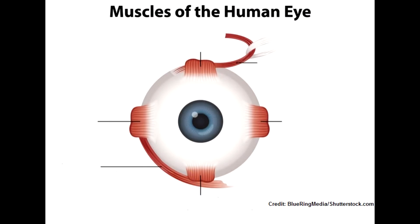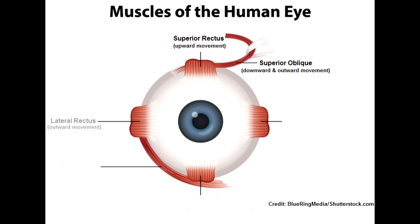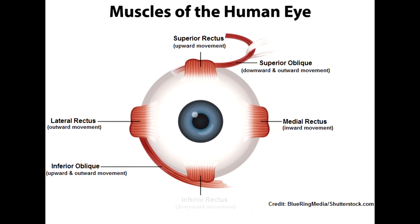So what eye muscles are we assessing? We are assessing the superior rectus, which helps with upward movement; the superior oblique, which helps with downward and outward movement; the lateral rectus, which helps with outward movement; the medial rectus, which helps with inward movement; the inferior oblique, which helps with upward and outward movement; and lastly the inferior rectus, which helps with downward movement.